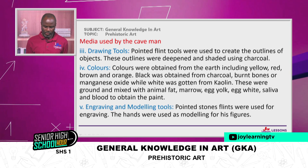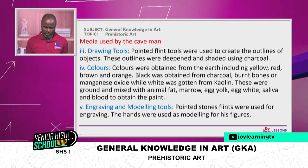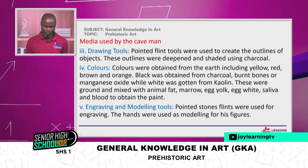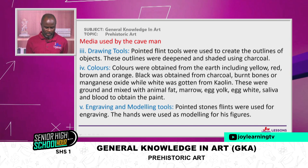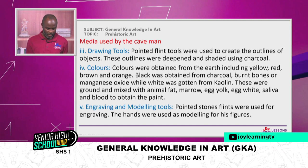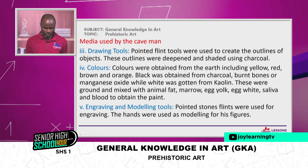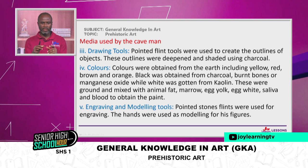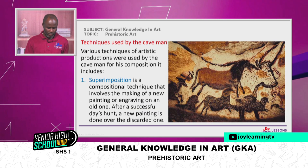Colours were obtained from the earth, including yellow, red, brown, and orange. Black was obtained from charcoal, burnt bones, or manganese oxide, while white was obtained from kaolin. These earth colours were ground with animal fats, then mixed with marrow, egg yolk, egg white, saliva, blood, and cave water to make paint. For engraving and modelling, he used pointed stones and flints for engraving, and his hands as a tool for modelling.